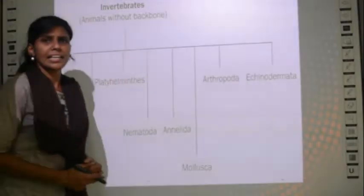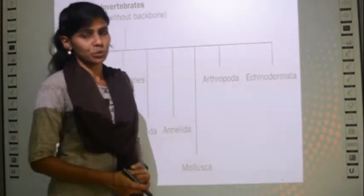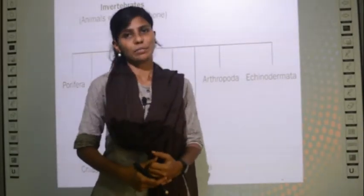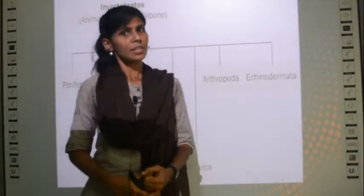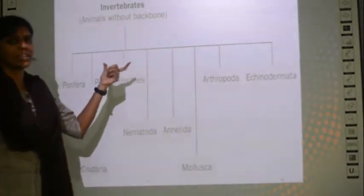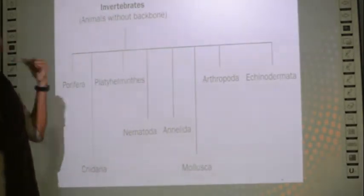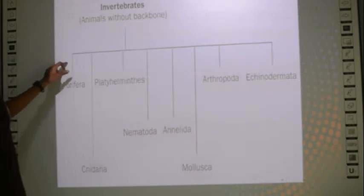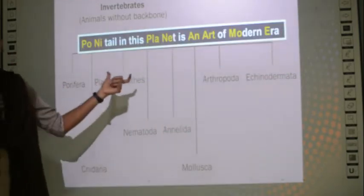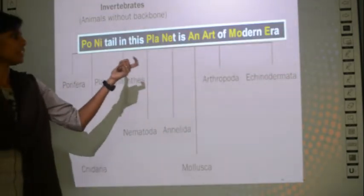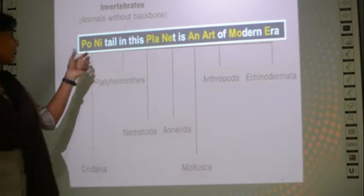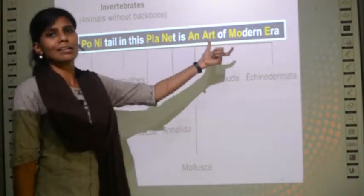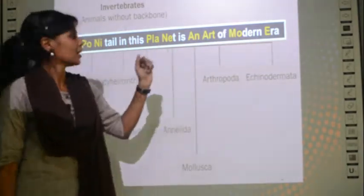Generally the animal kingdom is classified into two groups called invertebrates and vertebrates. This chart is the classification chart for invertebrates. For learning this chart we have an easy method - just memorize this sentence: 'Ponytail in this planet is an art of modern era.'